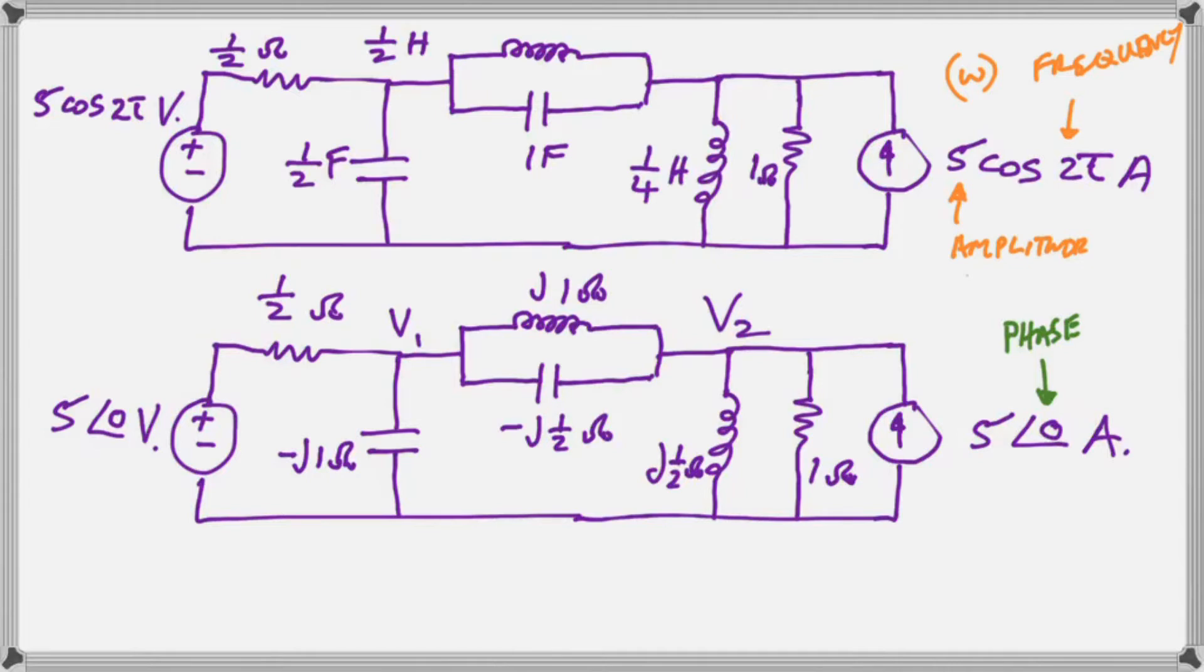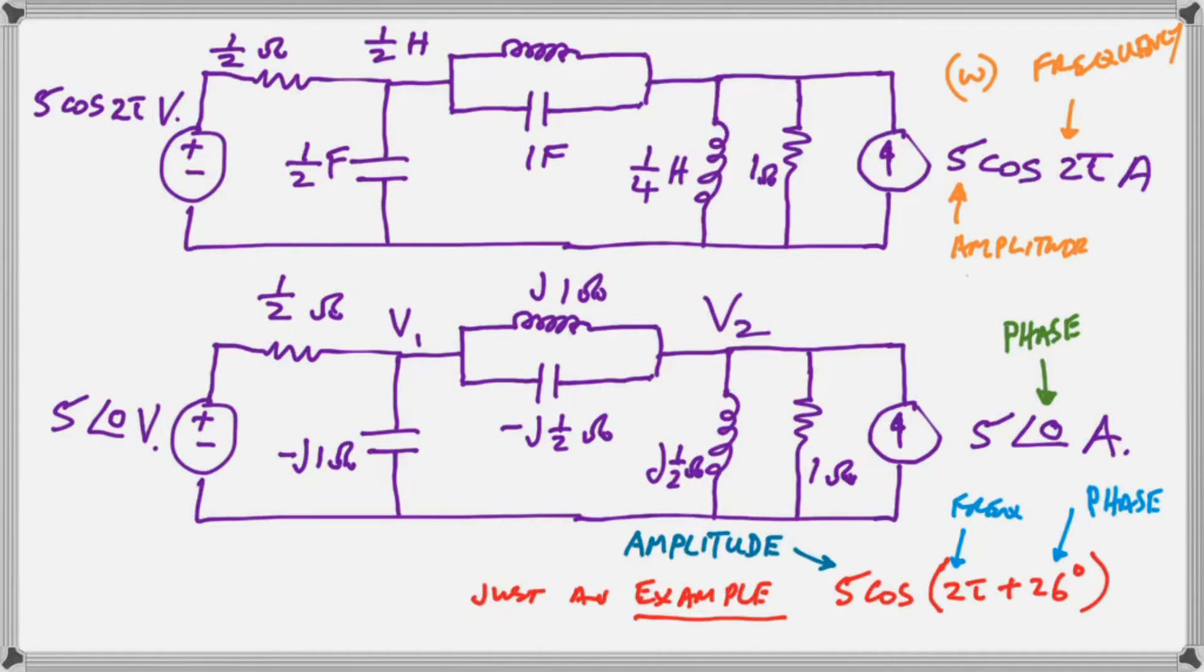How do we know we have no phase angle? Well, as you can see for an example, if we had a phase angle, it would be a consistent and constant angle added to our 2t. So, it's pretty straightforward. The phase is 0 for our two sources and the frequency is omega equals 2.